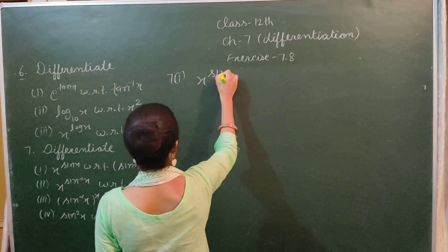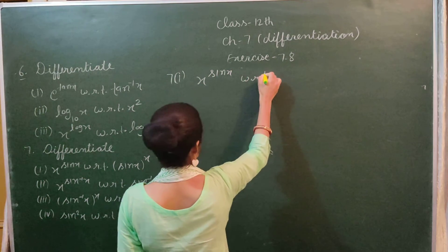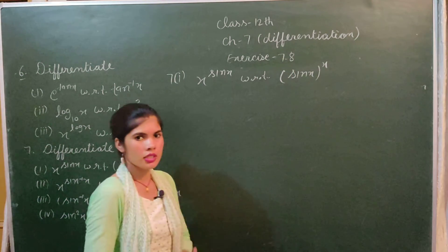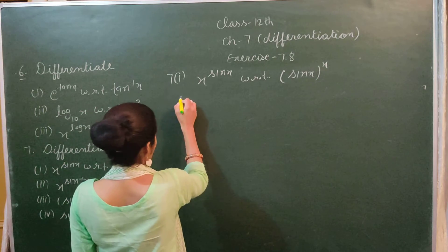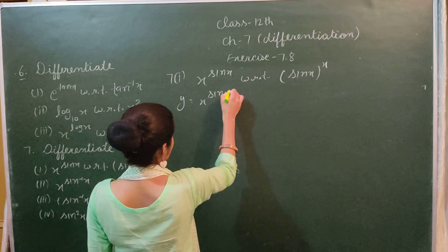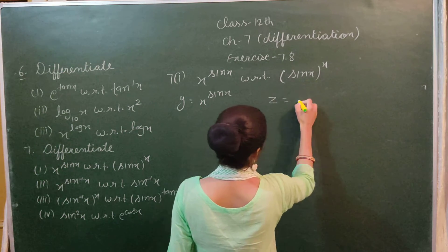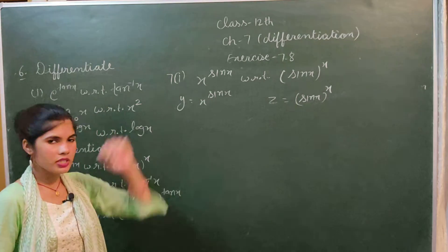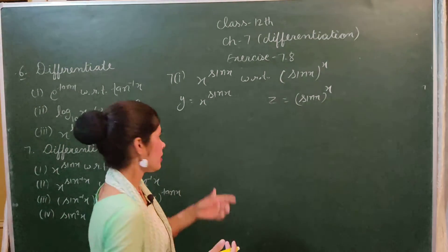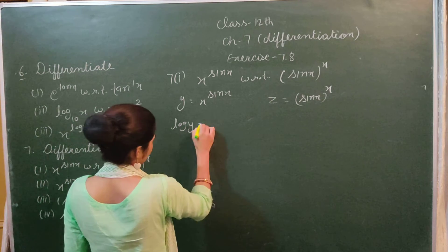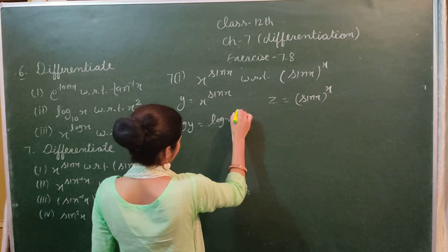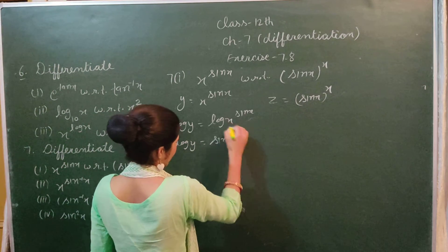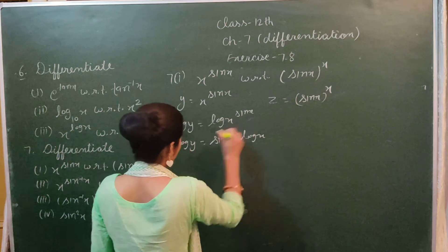In the first part of the seventh sum, we have to differentiate x^(sin x) with respect to (sin x)^x. We let y = x^(sin x) and z = (sin x)^x. Since both are function to the power of function, we take log on both sides: log y = sin x times log x.